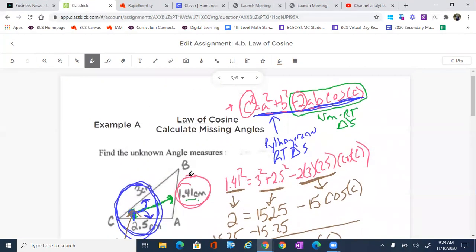So there is the law of cosine and solving for missing angles. I hope that helps. And remember, break it into those three pieces so you can solve easier.